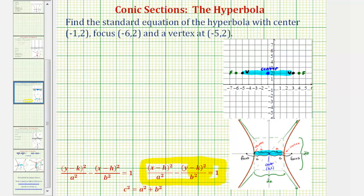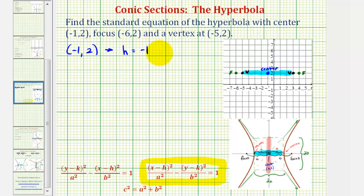In this form, h and k are the coordinates of the center, a is the distance from the center to the two vertices, and b is the distance from the center to the two endpoints of the conjugate axis. The center has coordinates negative one, two, so h equals negative one and k equals positive two. From the coordinate plane, the distance from the center to the vertices is four units, so a equals four. The distance from the center to the foci is five units, so c equals five.